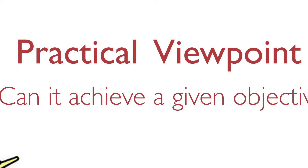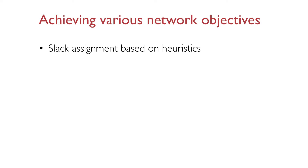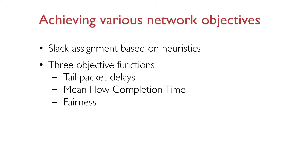Our theoretical viewpoint is not practical as it requires knowledge of the output times from an original schedule, which is not available in practice. In practice, what we care about is achieving different objectives. So with the practical viewpoint, we look at how LSTF can be used in practice. The key difference lies in how we assign the slacks: rather than using original output times, we look at the network-wide objective and come up with heuristics to assign slack. We examine three popular objectives: minimizing tail packet delays, minimizing mean flow completion time, and fairness. Our results show that LSTF performs comparable to the state of the art for each.